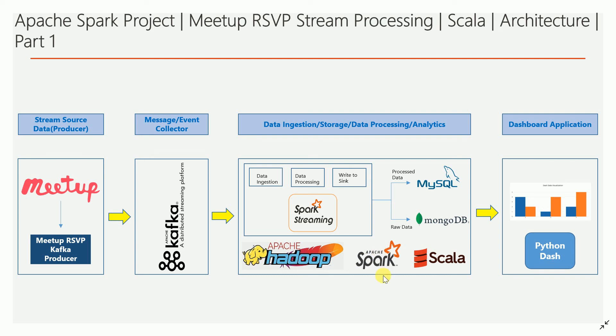This project will be built using Scala as the programming language with Apache Spark as the distributed processing engine. Spark Structured Streaming is the advanced version of Spark Streaming and is based on DataFrame operations — essentially an unbounded DataFrame you can process in real time. Finally, we will build a real-time dashboard using Python Dash, a Python package developed by Plotly, which uses Flask and Plotly for visualization.